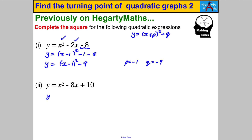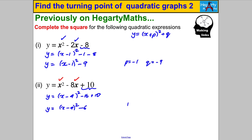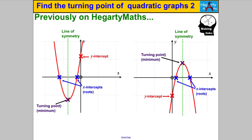Exactly the same process for the second one. We write y equals (x + something)², halving negative 8 to get negative 4. Expanding gives x² − 8x + 16, so we take off that 16 but don't forget to add back that 10. Tidying up, y = (x − 4)² − 6, where P is negative 4 and Q is negative 6. You need to be super good at that skill for this video.